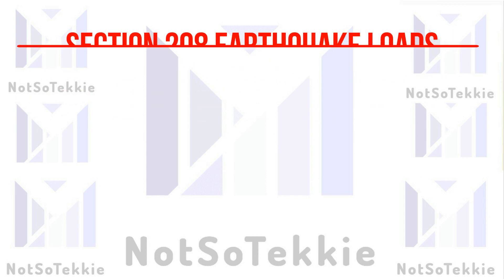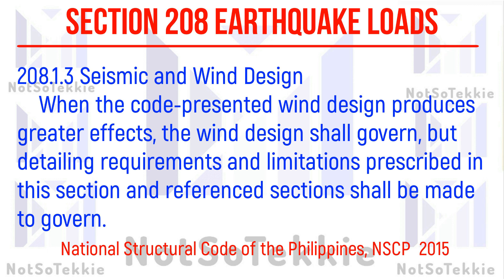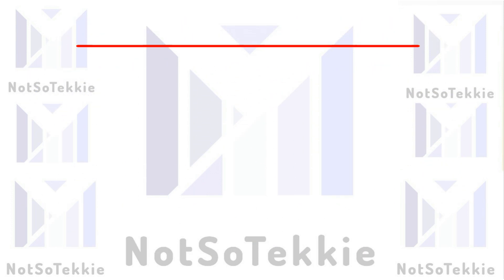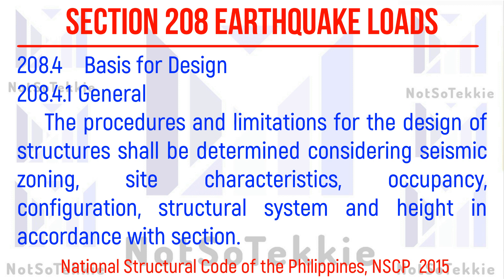Structures and portions thereof shall, as a minimum, be designed and constructed to resist the effects of seismic ground motions as provided in these sections. Then Section 208.1.1.3: where wind design produces greater effects, the wind design shall govern, but detailing requirements and limitations prescribed in this section and reference section shall be made to govern. Basis for Design: the procedures and limitations for the design of structures shall be determined considering seismic zoning, site characteristics, occupancy configuration, structural system, and height in accordance with the section.